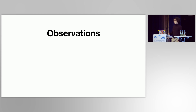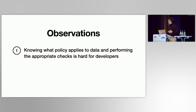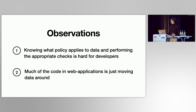There are two main observations that underpin our work. The first is that developers are people, and people make mistakes, especially when reasoning about complex and convoluted systems. It's hard for developers to remember which policy applies to which data and to perform the checks where needed. The second observation is that the core business logic of a web application is actually just moving data around, so the regions critical to privacy policy enforcement are small and well-contained.